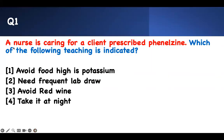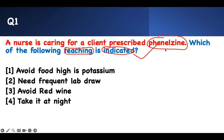First question — straightforward, concept-based. Which of the following teachings is indicated when caring for a client prescribed phenelzine? I've underlined two things — those are your buzzwords: phenelzine, indicated, teaching. In pharmacology, you need to recognize the medication. What is this? It's a monoamine oxidase inhibitor.